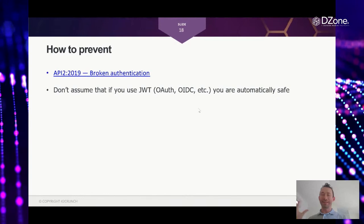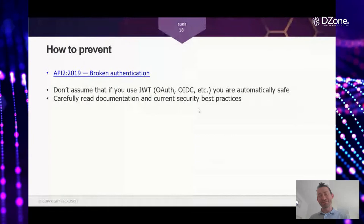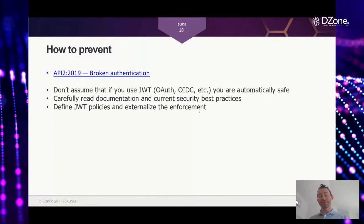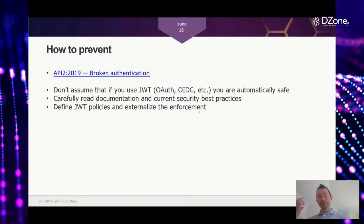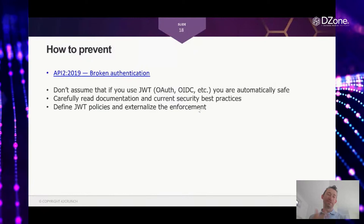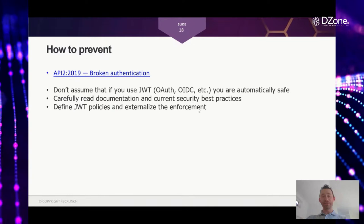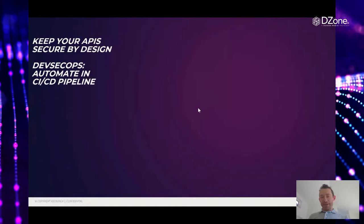To prevent this: don't assume that just because you're using JWT, OAuth, OpenID Connect, or any other industry technology you're automatically safe — all of these can be vulnerable if not used correctly. Carefully read the current security best practices for whatever framework you're using. In Apache Pulsar's specific case, developers used a framework method that didn't enforce signature checking; using a different method from the same framework would have prevented the issue. If your product lets you define JWT policies and externalize enforcement, use that rather than relying on developers not forgetting to apply the right check.